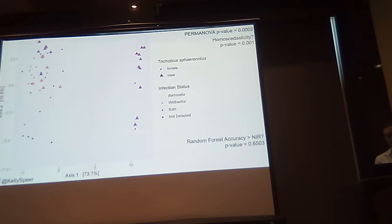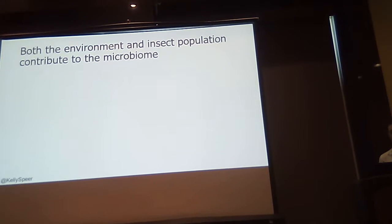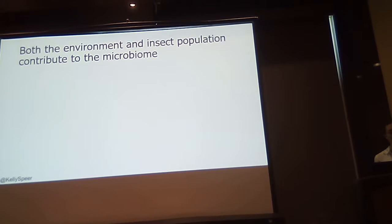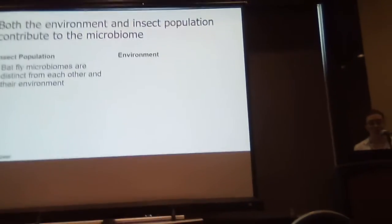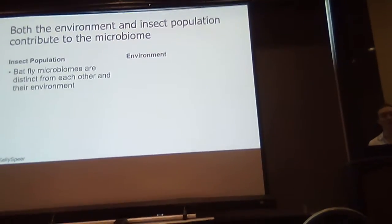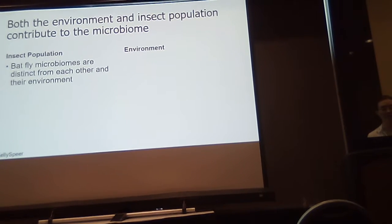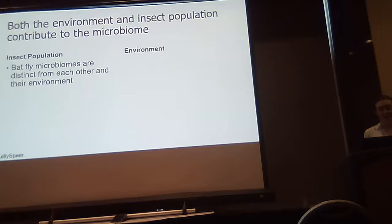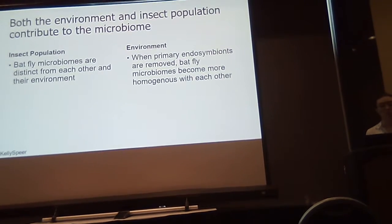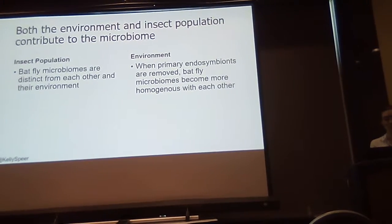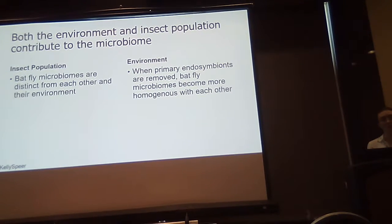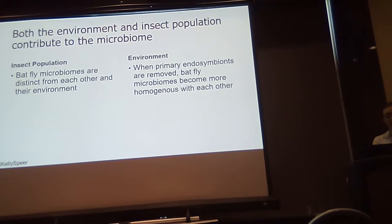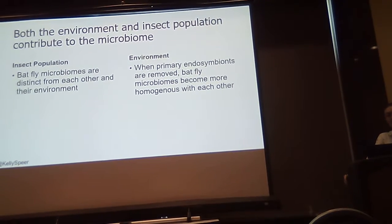So, somewhat uncertain there. But generally, what we can take away is that both the environment and insect population contribute to the microbiome. The evidence is that bat fly microbiomes are distinct from each other and from their environment. Sample type was the best predictor, and random forests did a good job classifying microbiomes by sample type. Environment may also contribute, because when we remove primary endosymbionts, bat fly microbiomes become more homogenous with each other, suggesting there is some conserved microbiome membership within bat flies that we may not have captured with our cave swabs.